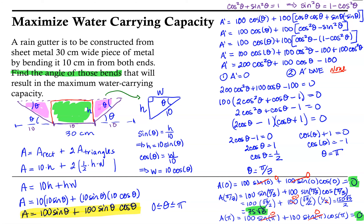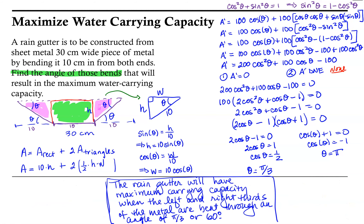Let's state our conclusion: the rain gutter will have maximum carrying capacity when the left and right thirds of the metal are bent through an angle of π/3, or 60 degrees. I hope you find this helpful.